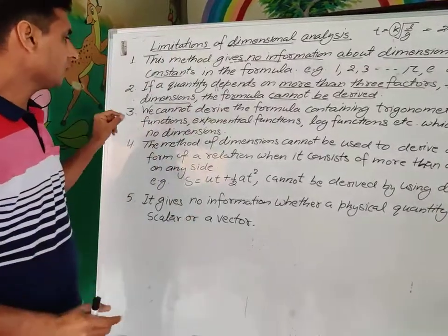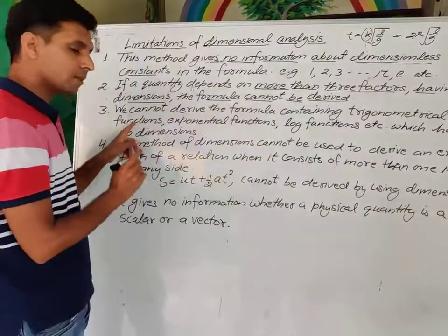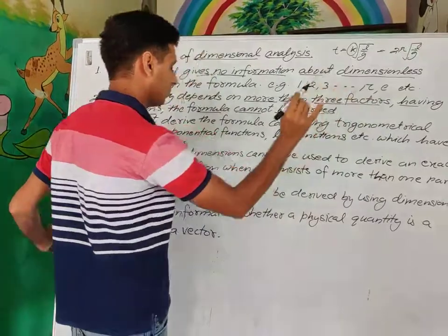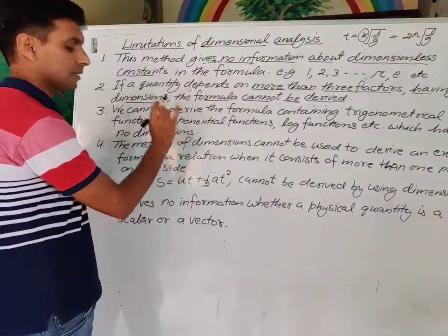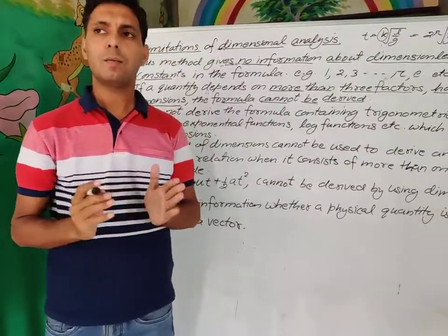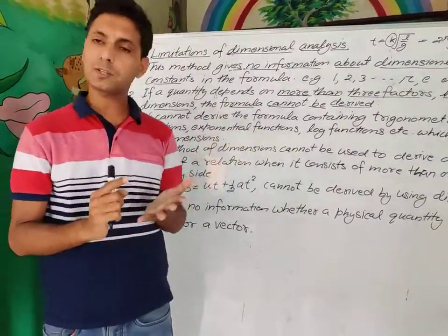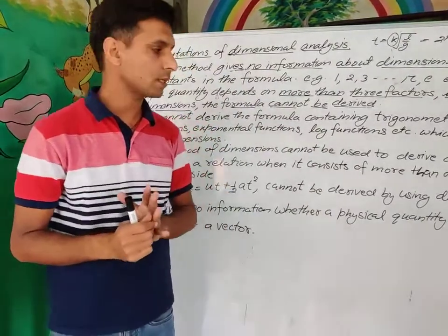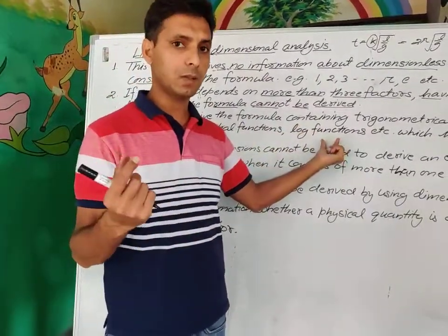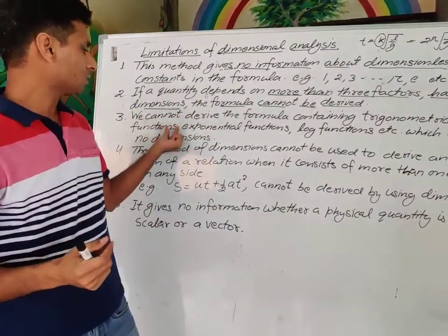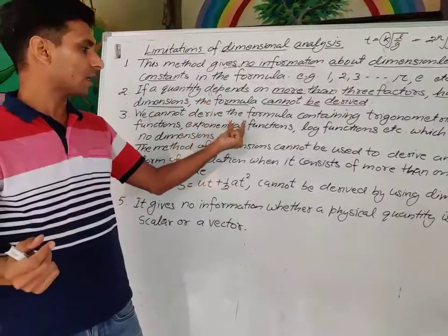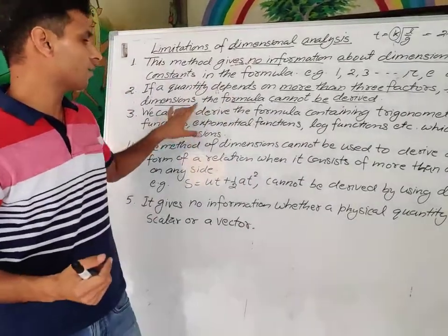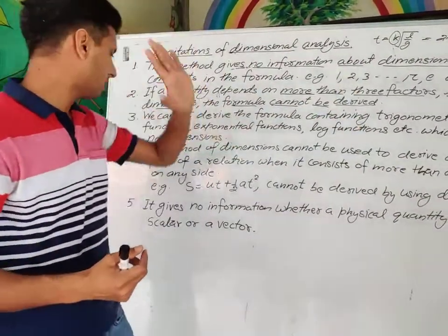Next limitation: we cannot derive a formula containing trigonometric functions — sin, cos, tan — exponential functions like e to the power, or logarithmic functions like log term — because these have no dimensions. So it means we cannot derive the formula for such physical quantities.